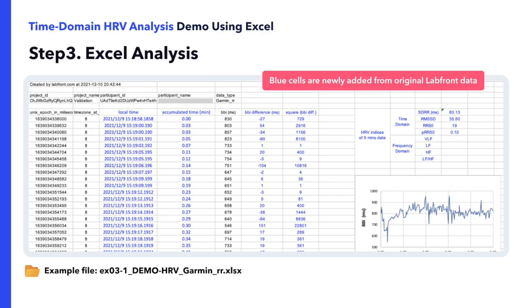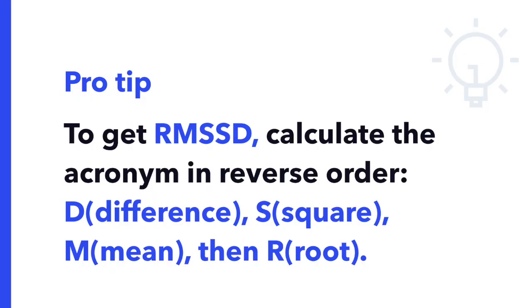And to get the RMSSD, we need to add a column representing the squared values of the values in the BBI difference column. From there, we can calculate the square value as well as the root of the mean of square values to derive our RMSSD.